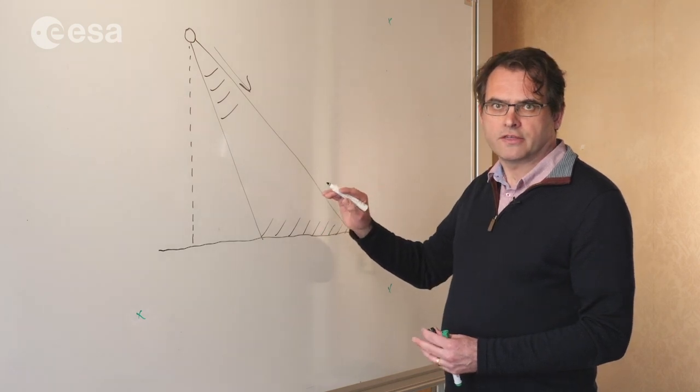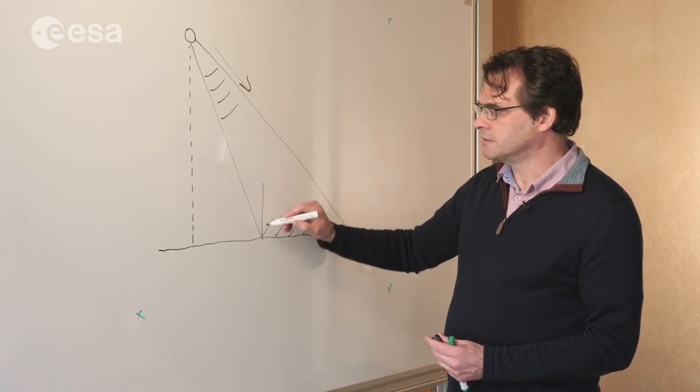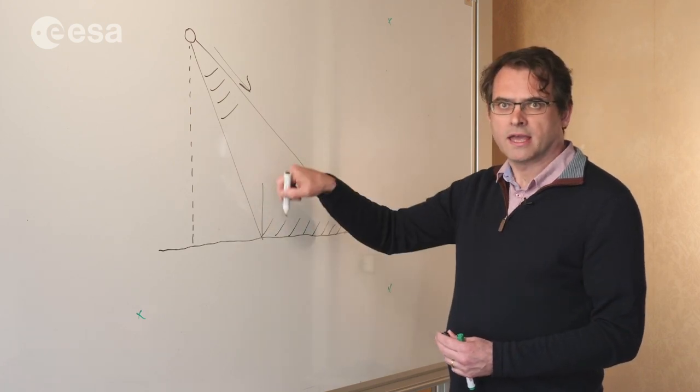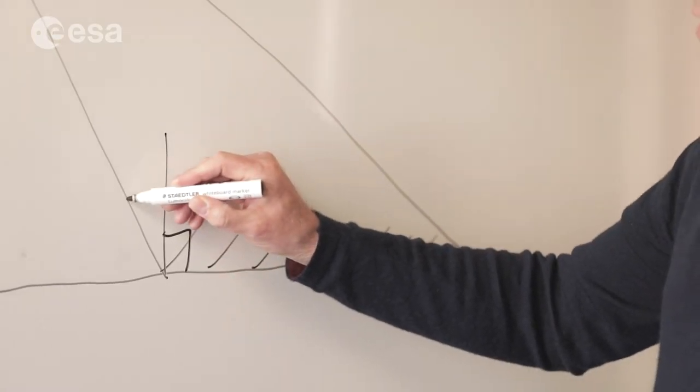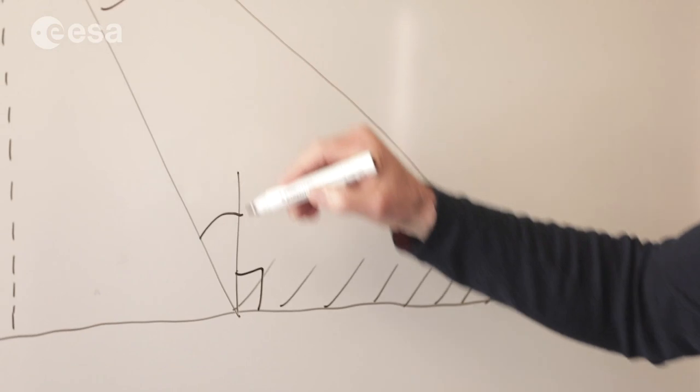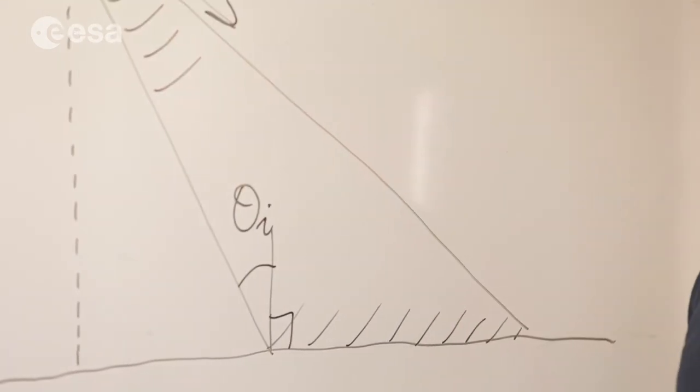The other significant thing that we have to consider is that this means that at the ground surface, we may be looking at different angles. The angle between the normal to the surface and the direction from the sensor to the ground, we refer to as the incidence angle,